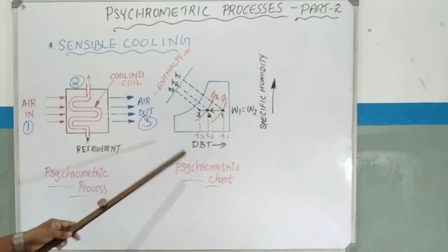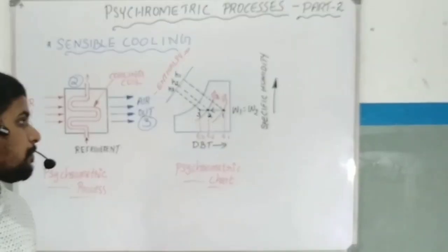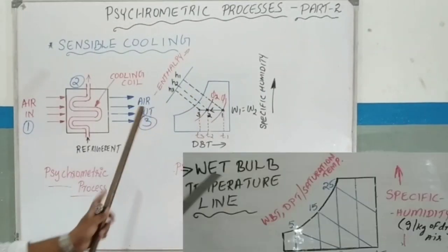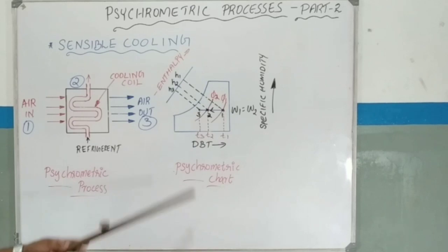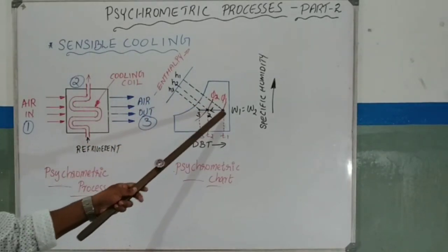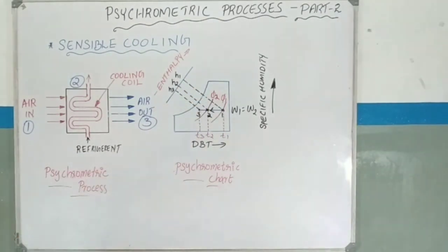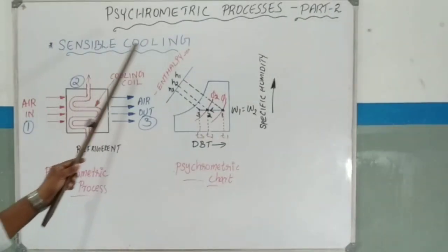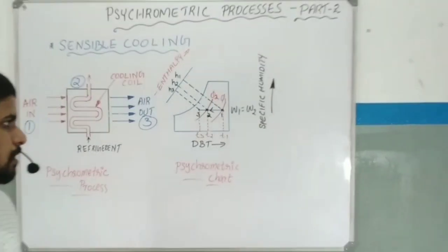The specific humidity, or WPT, remains constant throughout the sensible cooling process. Point 1, point 2, and point 3 all share the same specific humidity value. This means during sensible cooling, WPT does not decrease — it stays constant along the horizontal line.